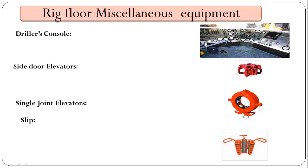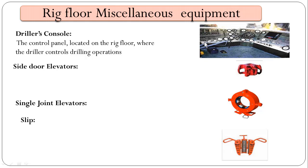Driller console: the control panel located on the rig floor where the driller controls the drilling operation. This is the driller console — a cabin inside which we have a control panel for running the rig equipment. We have different gauges, including a weight indicator for measuring the string weight, and a control panel from where the driller can control the mud pumps.